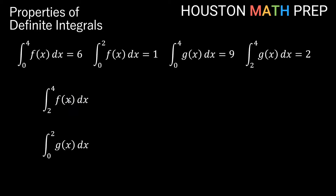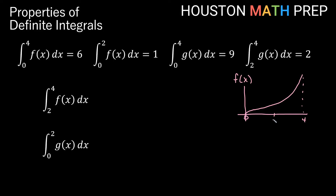For the last two examples, we want the definite integral of f from x equals 2 to x equals 4. We know the integral from 0 to 4 is 6, and from 0 to 2 is 1. Using the additive interval property, the total area from 0 to 4 must equal the area from 0 to 2 plus the area from 2 to 4. So: 6 equals 1 plus the area from 2 to 4, meaning the integral from 2 to 4 is 5.